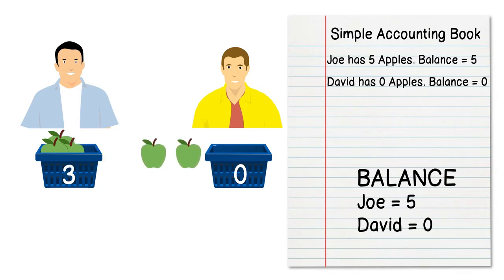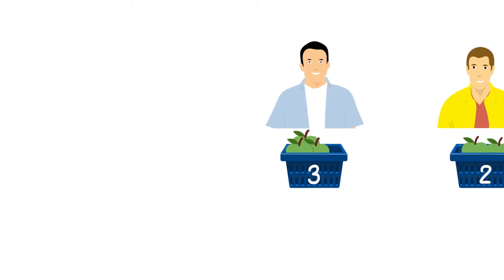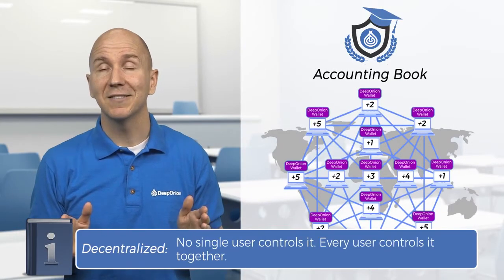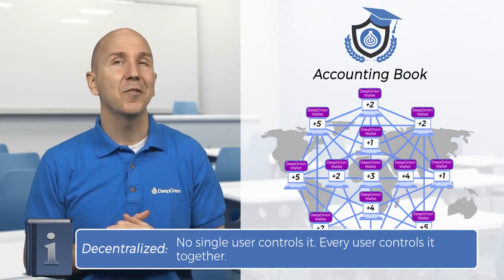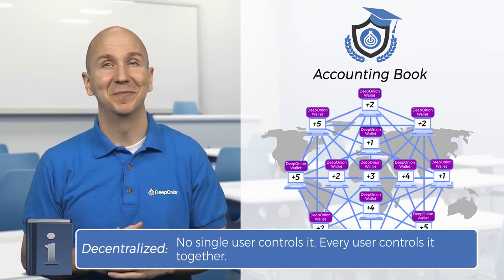Joe sends two of his apples to David. Joe's new balance is three, and David's new balance is two. Since the blockchain is decentralized, this information or data is public and spread to everyone running it.